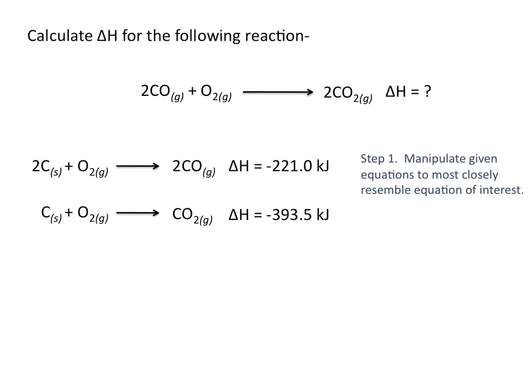The first step is to manipulate the given equations so that they most closely resemble the equation of interest. In the reaction of interest, carbon monoxide is on the reactant side. Of the two equations given below, carbon monoxide appears in only one of these equations, and it's on the product side.